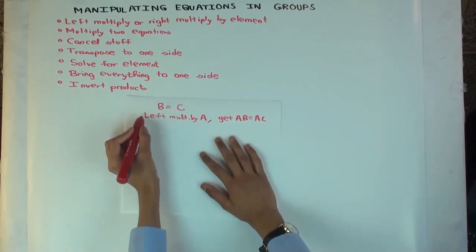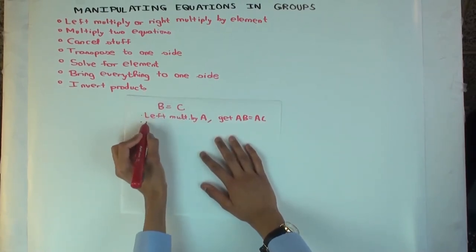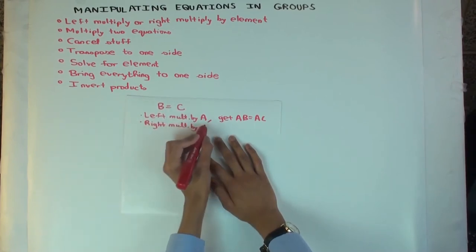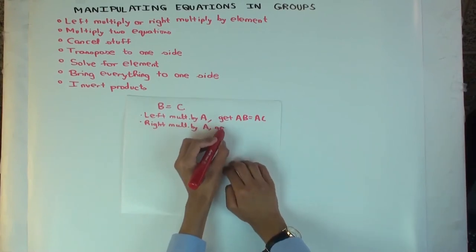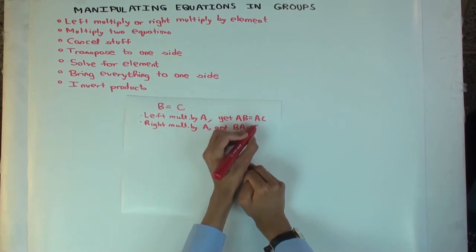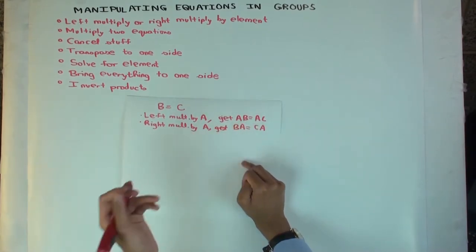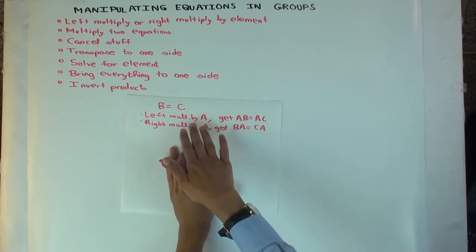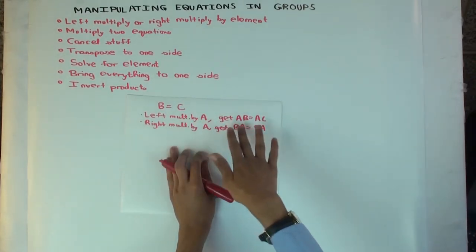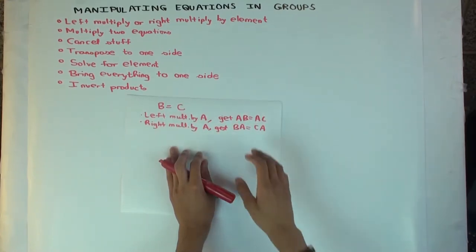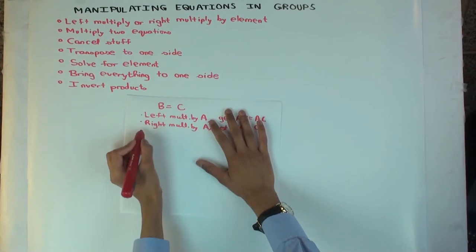If instead you did right multiplication by A on the original equation, what would you get? B equals C becomes BA equals CA. You could also left multiply by something and right multiply by something else — you put something on the left and something else on the right. But you have to be careful: if you're doing left multiplication, you put it on the left in both places; if you're doing right multiplication, you put it on the right in both places. You can also multiply two equations.